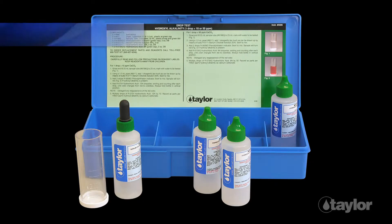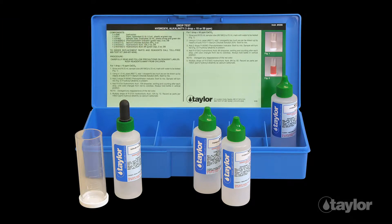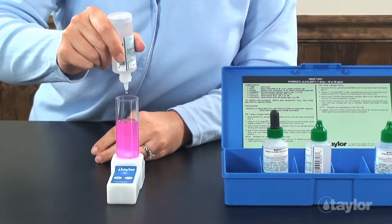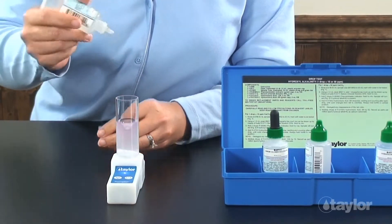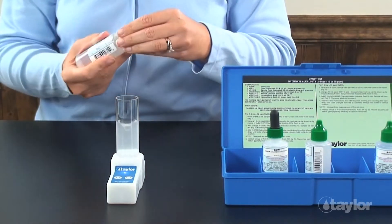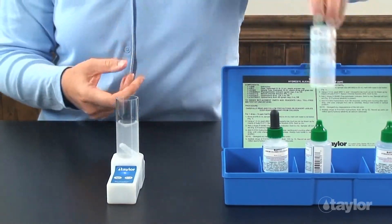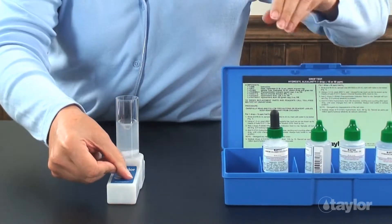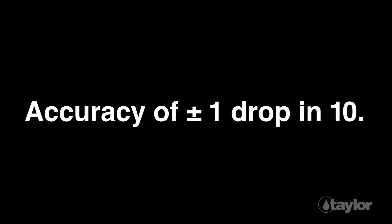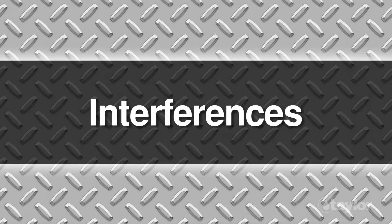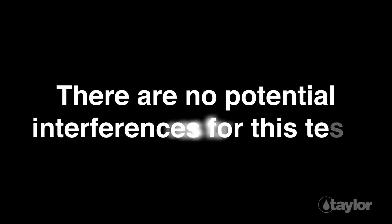Taylor's K1537 contains a simple-to-perform drop test, and the distinct color change that signals the endpoint is easy to recognize. Drop tests are very economical and provide test results with an accuracy of plus or minus 1 drop in 10. There are no potential interferences for this test.